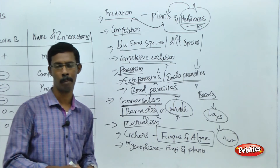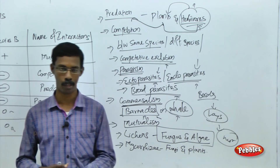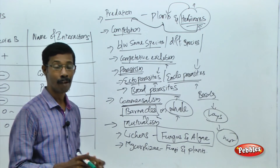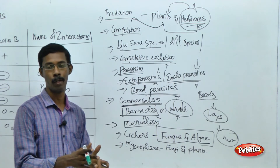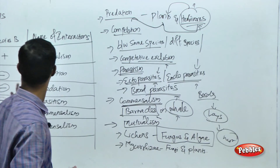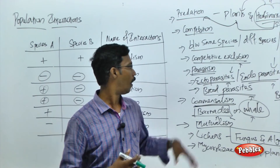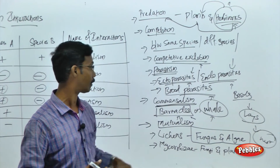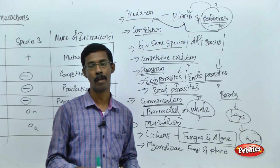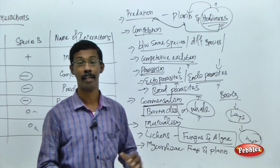These are all the things to remember about populations: what is population, what are all the population attributes, what are all the factors which affect population growth, what are all the models of population, and what are all the interactions of individuals in the population with examples. These are all the things we have to remember in the topic called population. Now we are going to move to the next topic, which is the ecosystem.